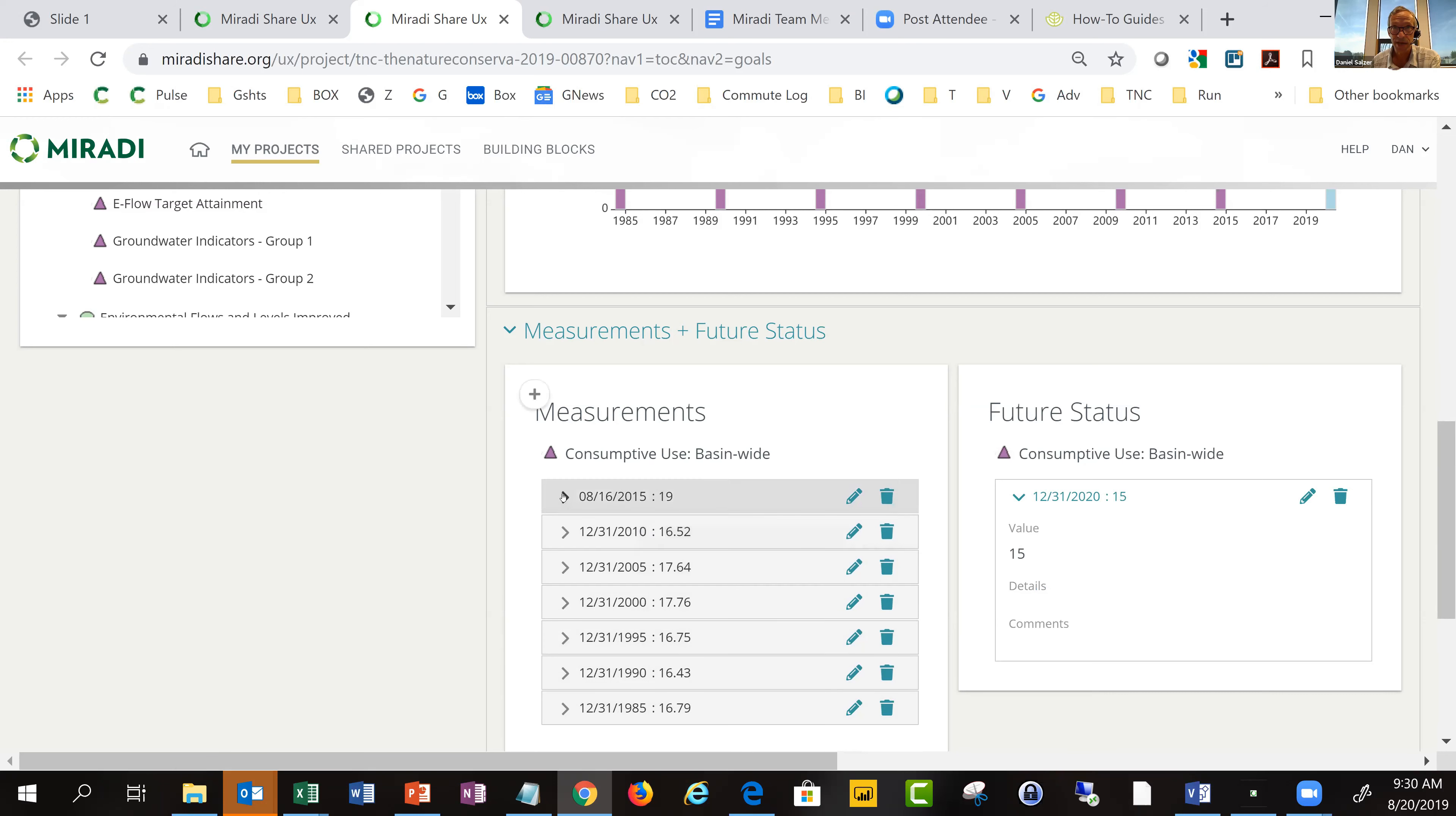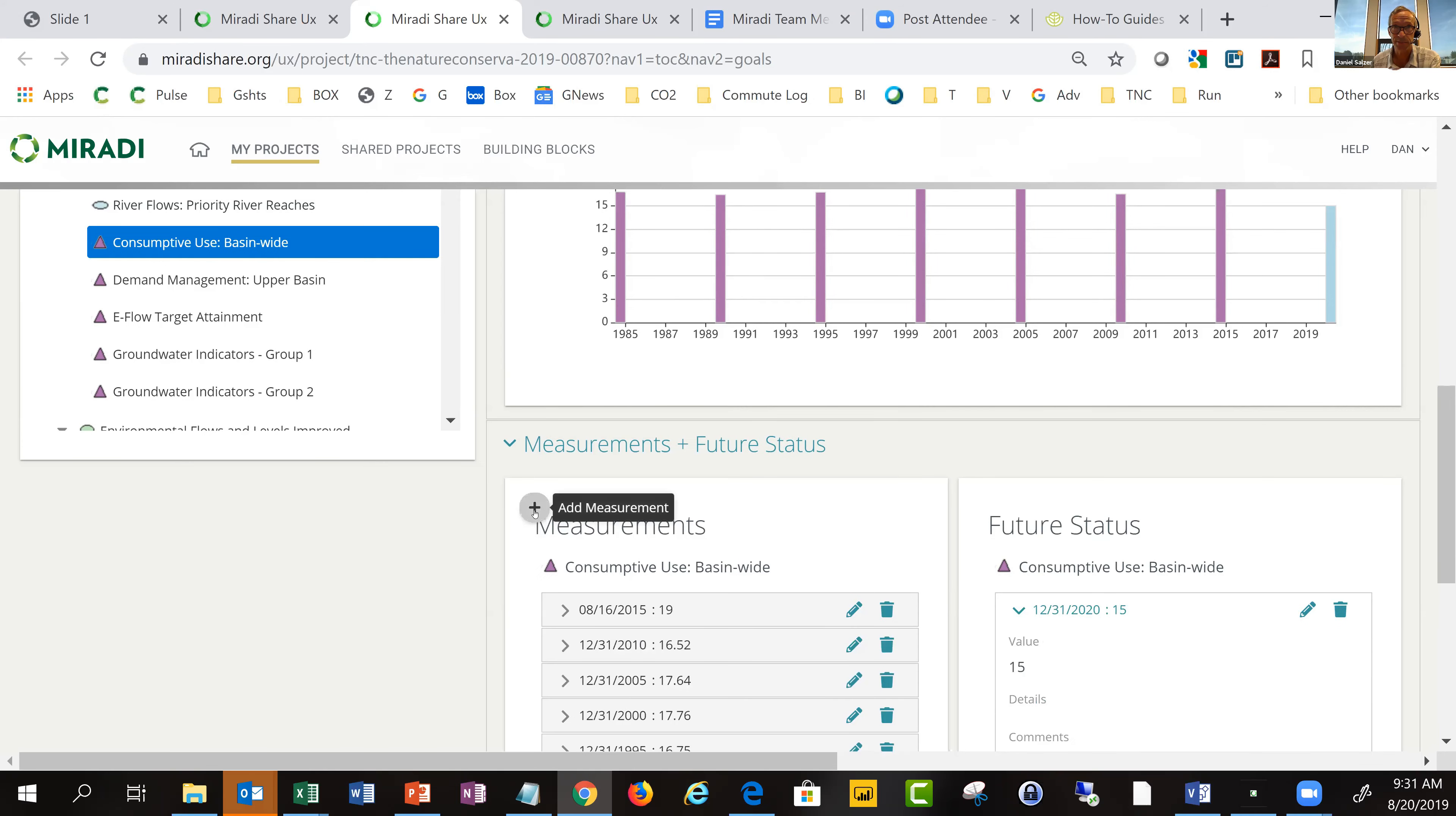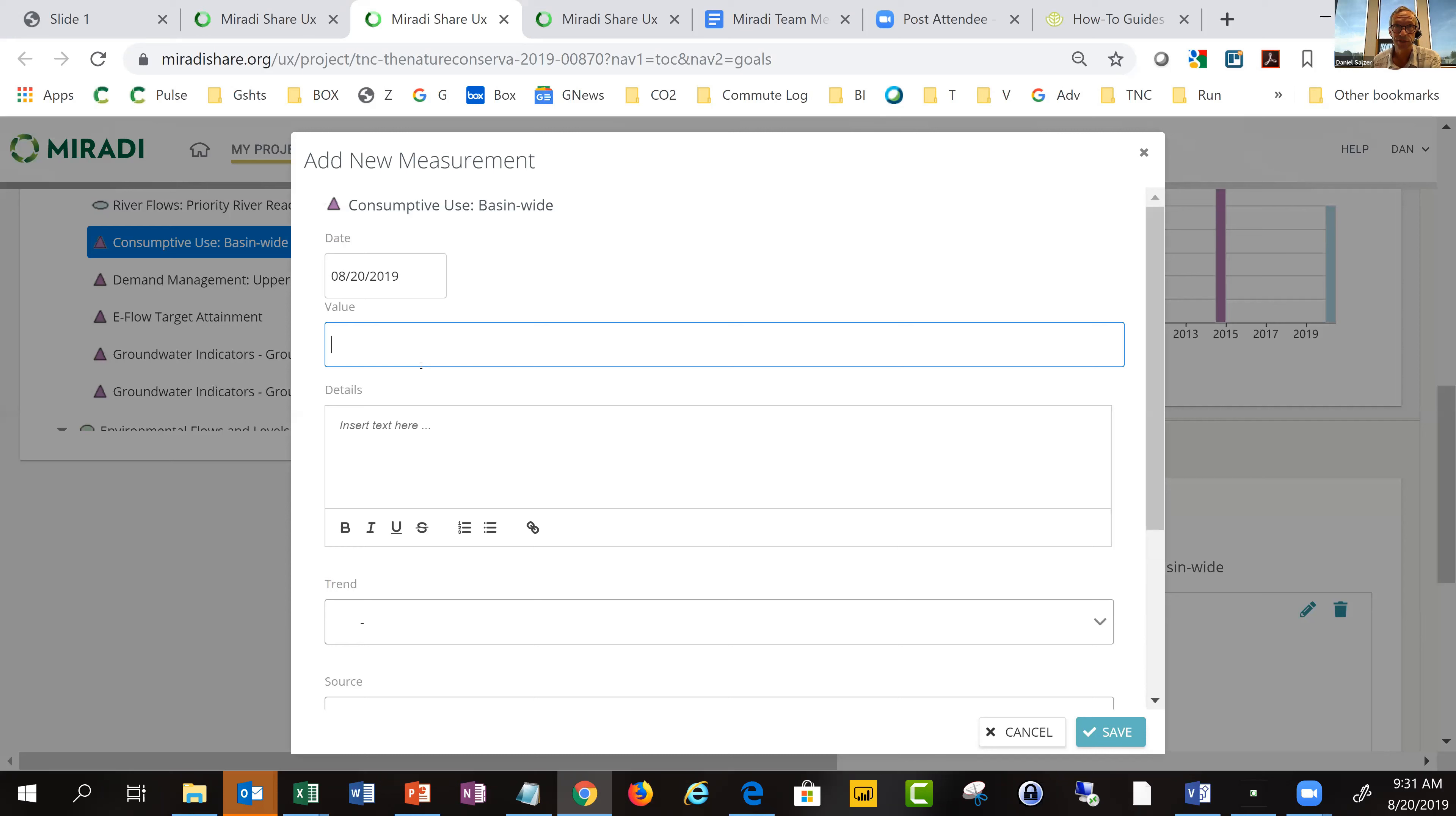This is where you have the basis of looking at quantitative indicator measurements. There's the desired future status on the right. Those are the other measurement values we saw in Miradi desktop. If I scroll down, you'll see each of these measurement values. It's easy to edit any of those entries there.